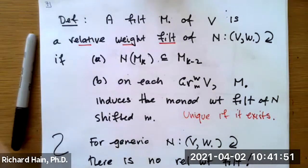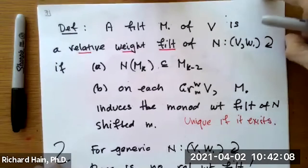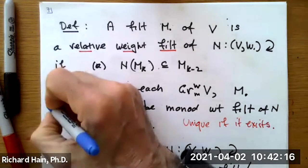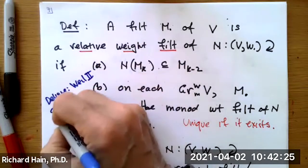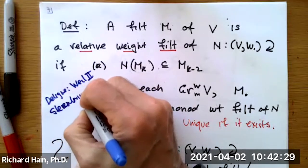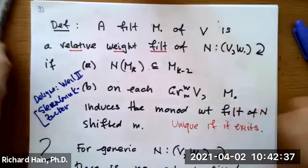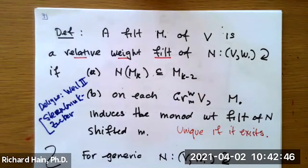For generic nilpotent endomorphisms of a filtered vector space, the relative weight filtration does not exist. Unlike the pure case where you always have a monodromy weight filtration, in the mixed case it is a highly non-trivial restriction — and that's why this is a very important condition. I believe the first place it appeared was in Vay, and there's also Steenbrink–Zucker. The definition of variations of mixed Hodge structure is due to Steenbrink–Zucker with additions by others like Kashiwara; they wrote down this condition when the base was a curve.